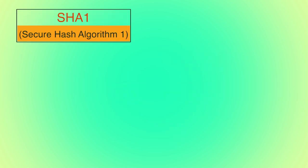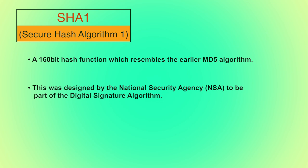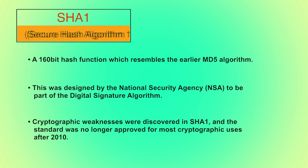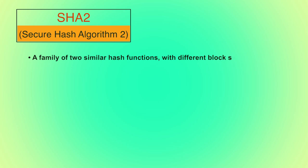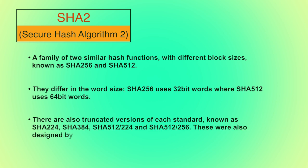SHA-1 stands for Secure Hash Algorithm 1. After the collision attack in MD5, SHA-1 was developed — it generates a 160-bit hash value and was designed by the National Security Agency (NSA) to be part of the Digital Signature Algorithm. However, cryptographic weaknesses were discovered in SHA-1, and it was no longer approved for most cryptographic uses after 2010. SHA-2 (Secure Hash Algorithm 2) is a family of two similar hash functions: SHA-256 using 32-bit words and SHA-512 using 64-bit words. Truncated versions also exist: SHA-224, SHA-384, and SHA-512/256. These were also designed by the NSA.